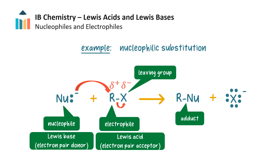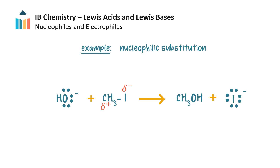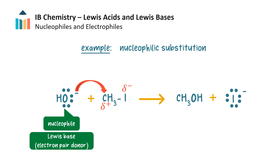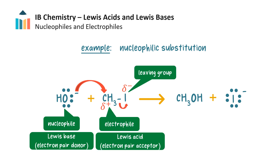This is the adduct formed. Notice there are two products in this particular Lewis acid-base reaction, as is the case with many organic reactions. Here is one specific example: the nucleophile or electron-rich species is the hydroxide ion, and it acts as a Lewis base by donating a lone pair. The electrophile or electron-poor species is the carbon atom attached to the halogen on the haloalkane, and it acts as a Lewis acid as it accepts the lone pair.